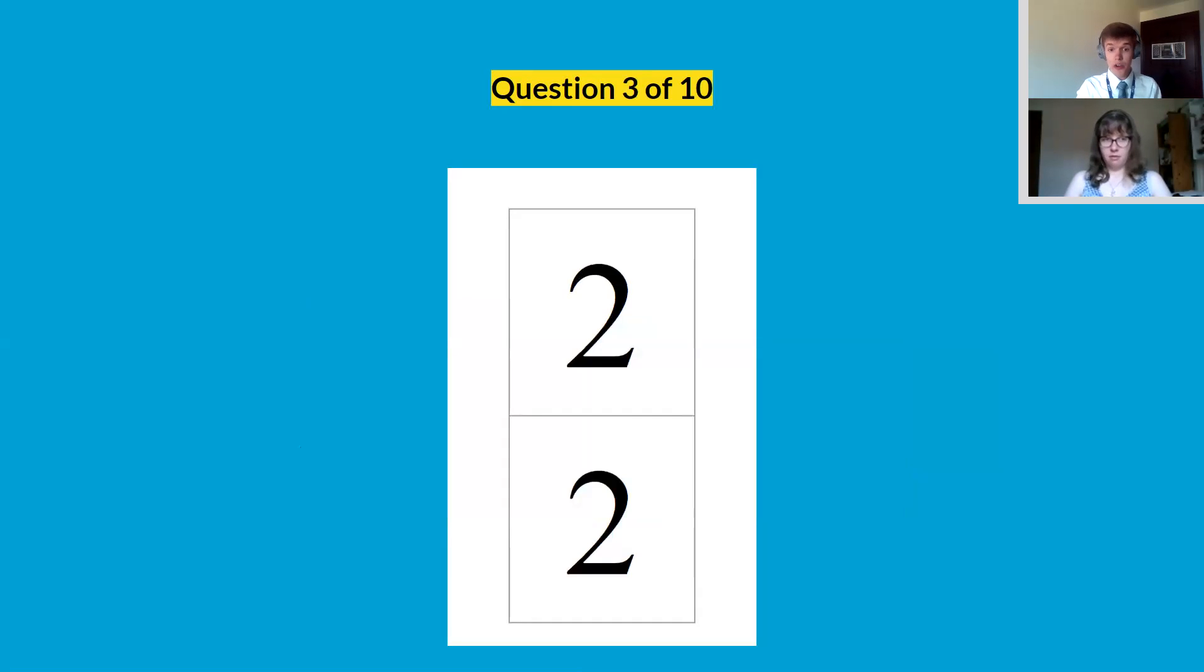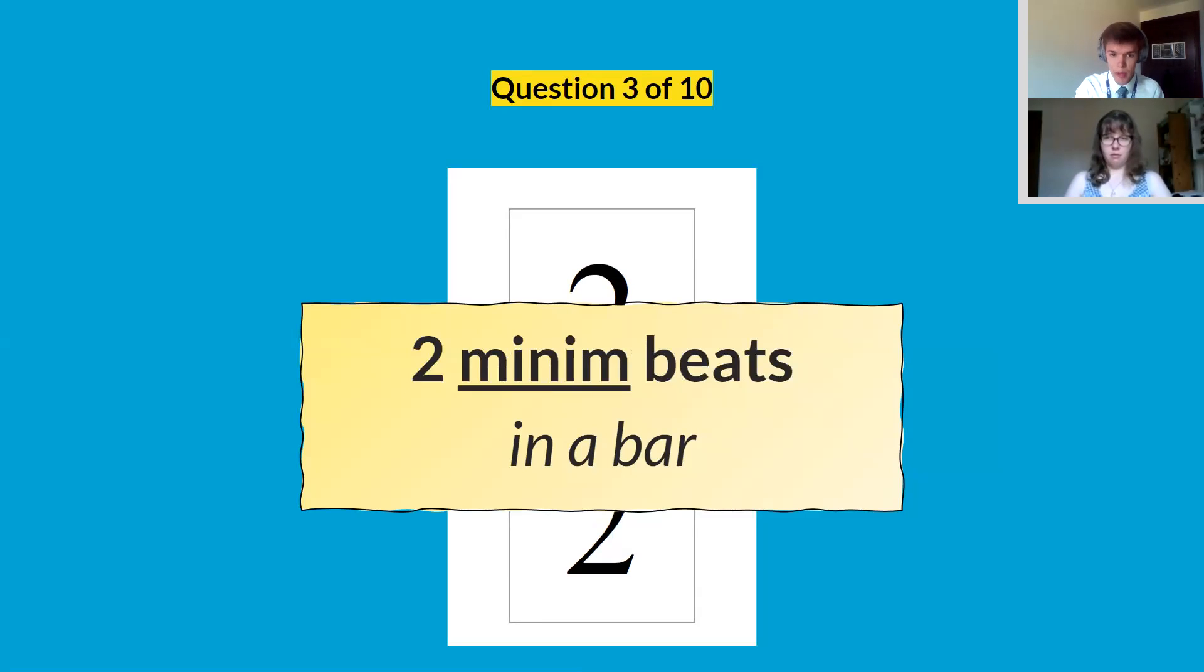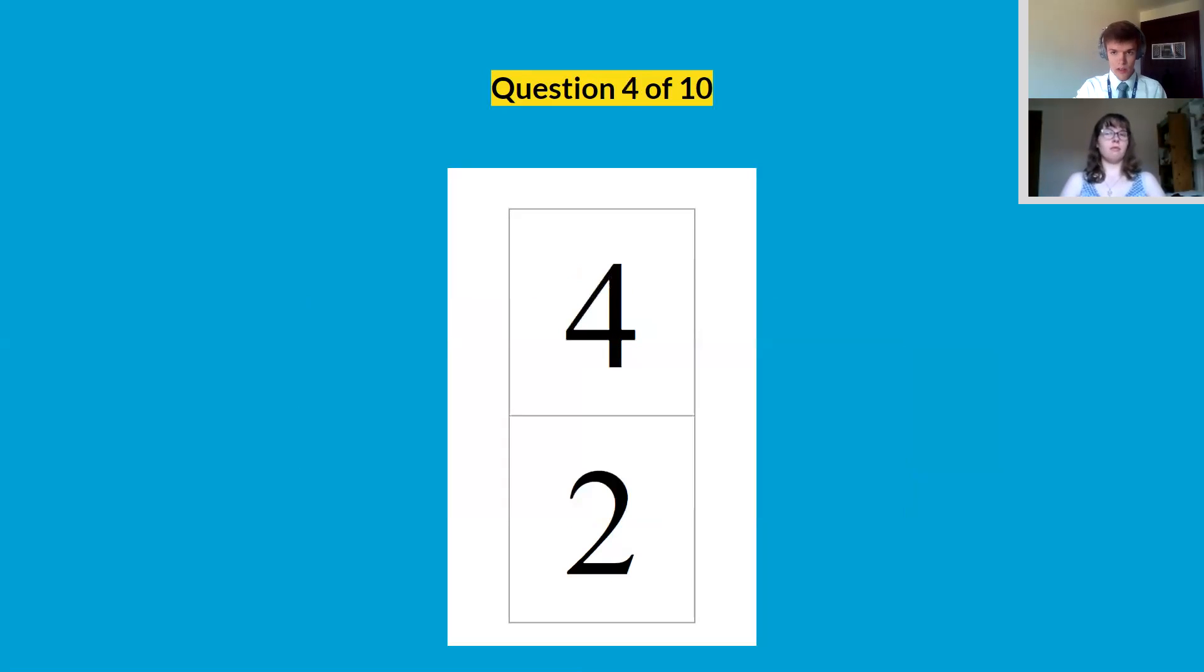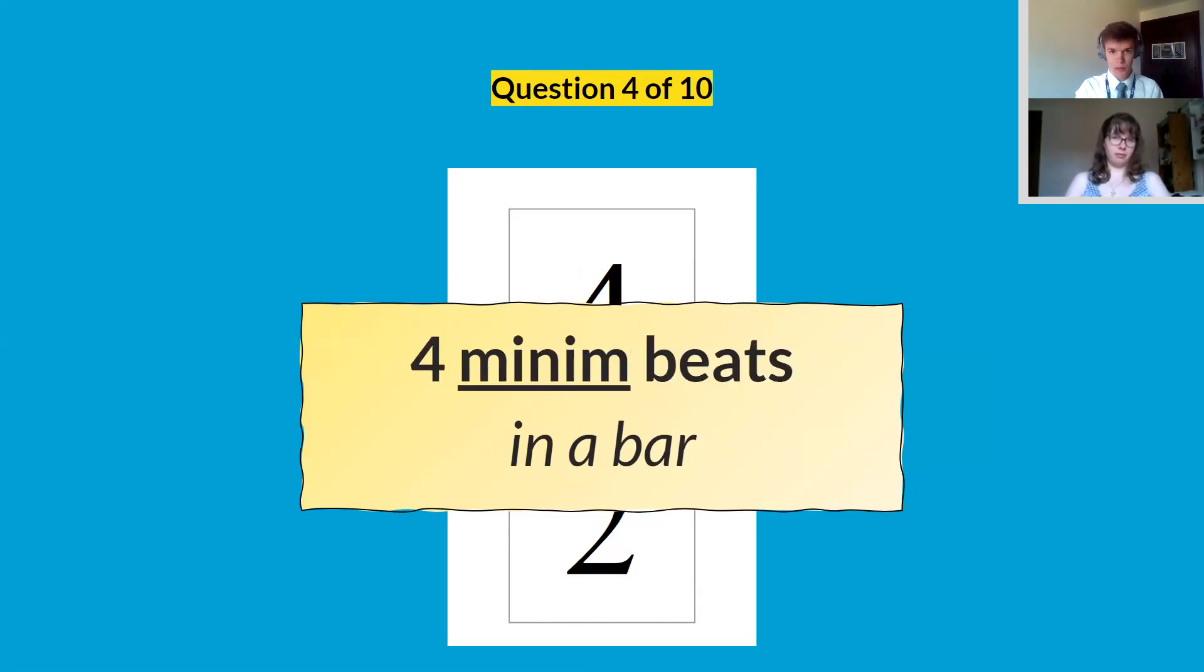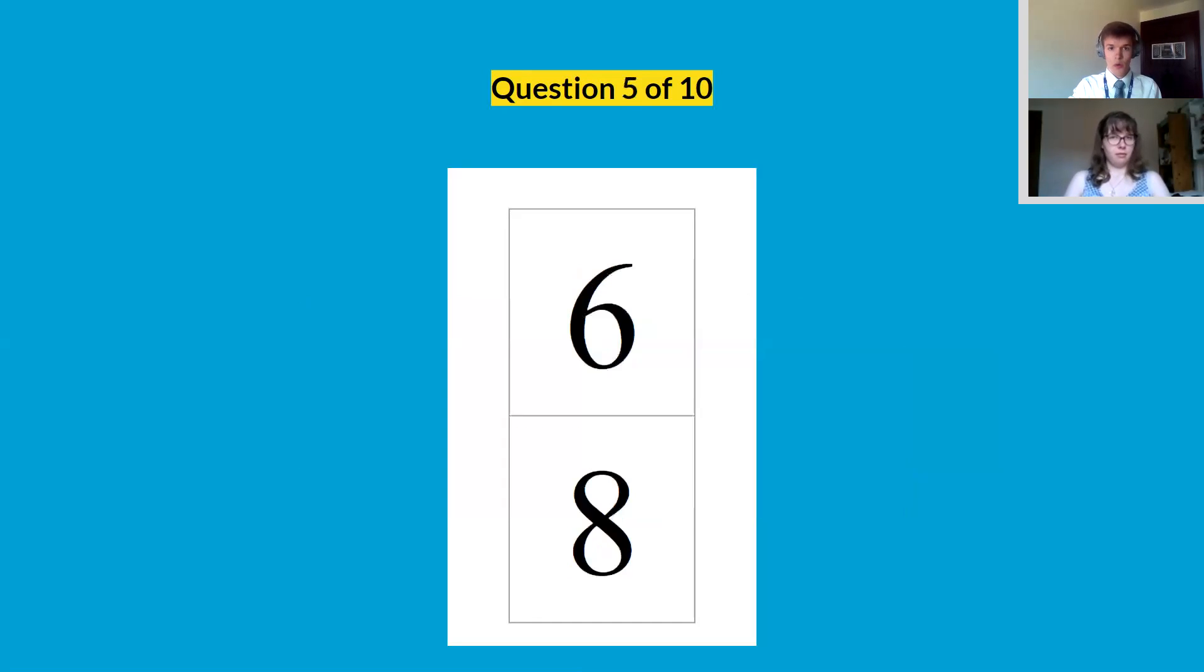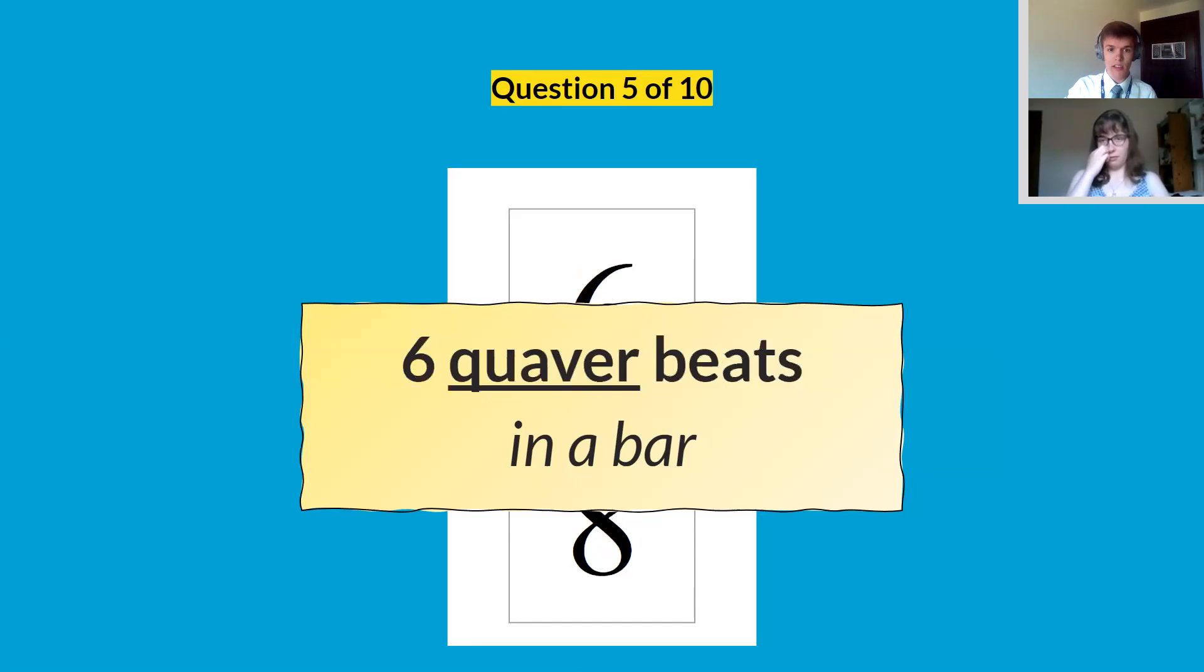Question number three, two, two. Well, we've got two at the bottom, so it's in minims. So we've got two minim beats in each bar. And question four, four minims in a bar. Question number five, we've got eight at the bottom for the first time. So that's talking about quavers. So six, eight is six quaver beats in a bar.